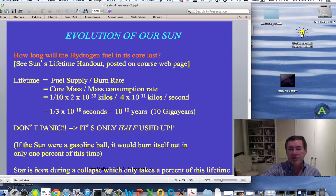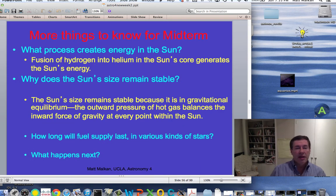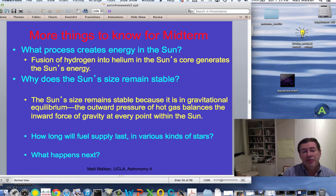Before I go on to that, I'll just have a little review slide here. This is certainly going to be on the midterm exam. What process creates energy in the sun? Currently, that's fusing hydrogen into helium only in the sun's core. And that's enough to give us the 4 times 10 to 26 watts. Why is the size of the sun what it is? It's a balance, a gravitational equilibrium between pressure and gravity. And how long will the fuel supply last? This raises an interesting question, which we'll get to in the next lecture.